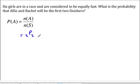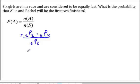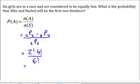In other words, Allie can come first or Rachel can come first — two possibilities. For the rest of the field, the number of ways they can finish is four choose four, which is four factorial. The total number of ways six racers can finish is the permutation of six choose six. This simplifies to two factorial times four factorial over six factorial, which equals one over fifteen.